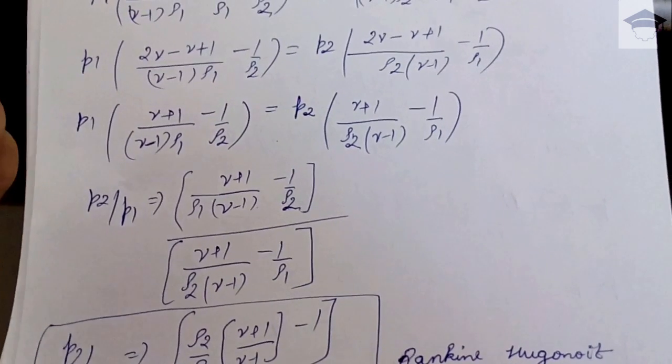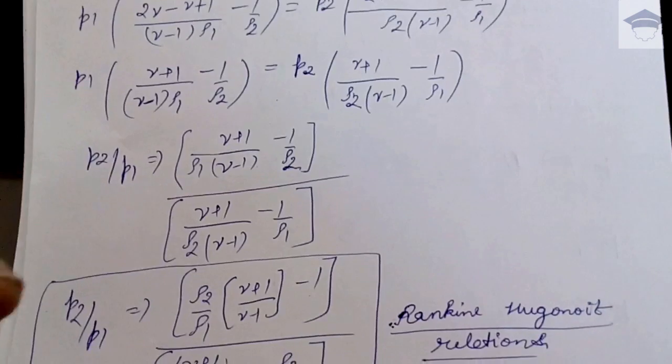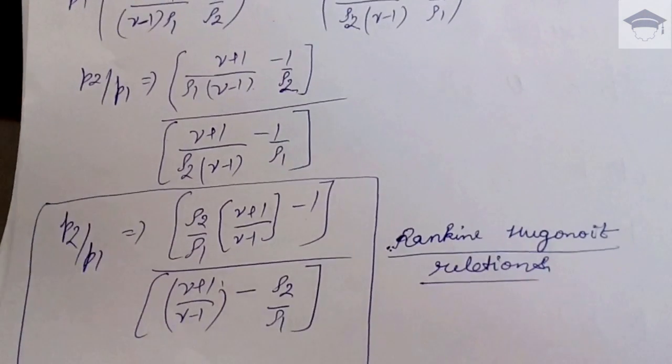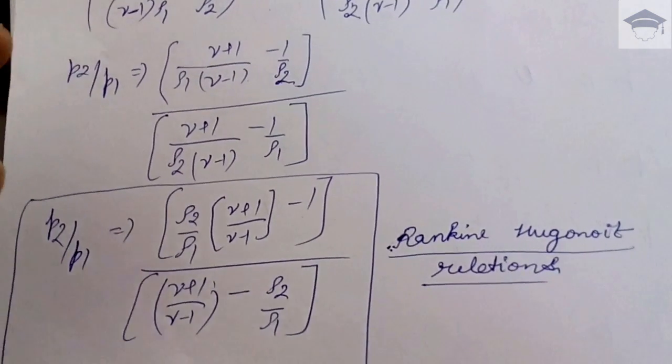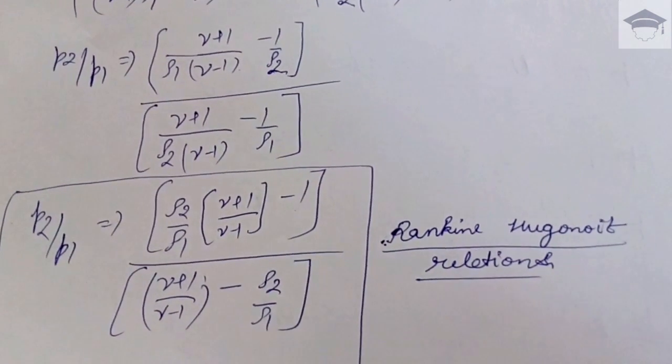So this is the Rankine Huguenot relation which shows the pressure ratio p2/p1 is a function of density, that is ρ2/ρ1, and it depends on the pressure ratio as well as the ratio of specific heat cp/cv, gamma.